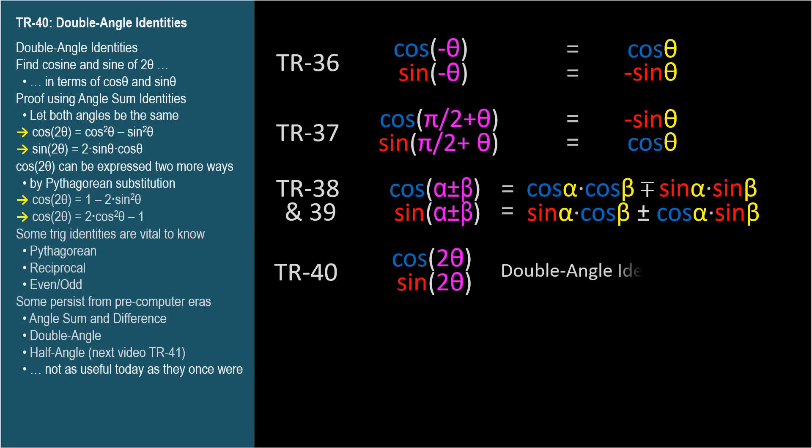In this video, we'll address the double angle identity, which is how we express the cosine and sine of 2θ in terms of the cosine and sine of θ.